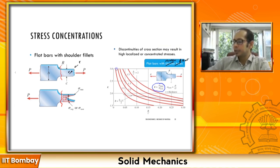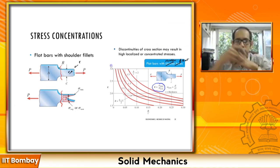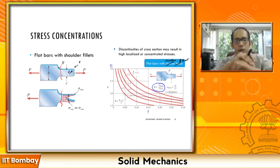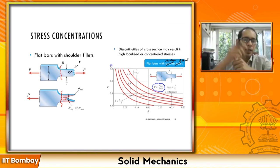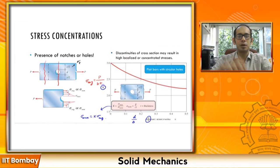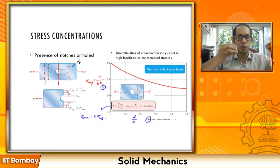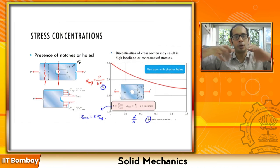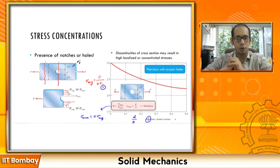These are examples of stress concentrations, and charts like these are available in design handbooks. Designers don't need to solve a full finite element analysis every time — they look up these tabulated charts for holes, shoulder fillets, and similar features to determine the required material, thickness, and height. With this we wrap up this topic. The next chapter moves to a completely different type of loading: torsion — twisting rather than axial pulling.